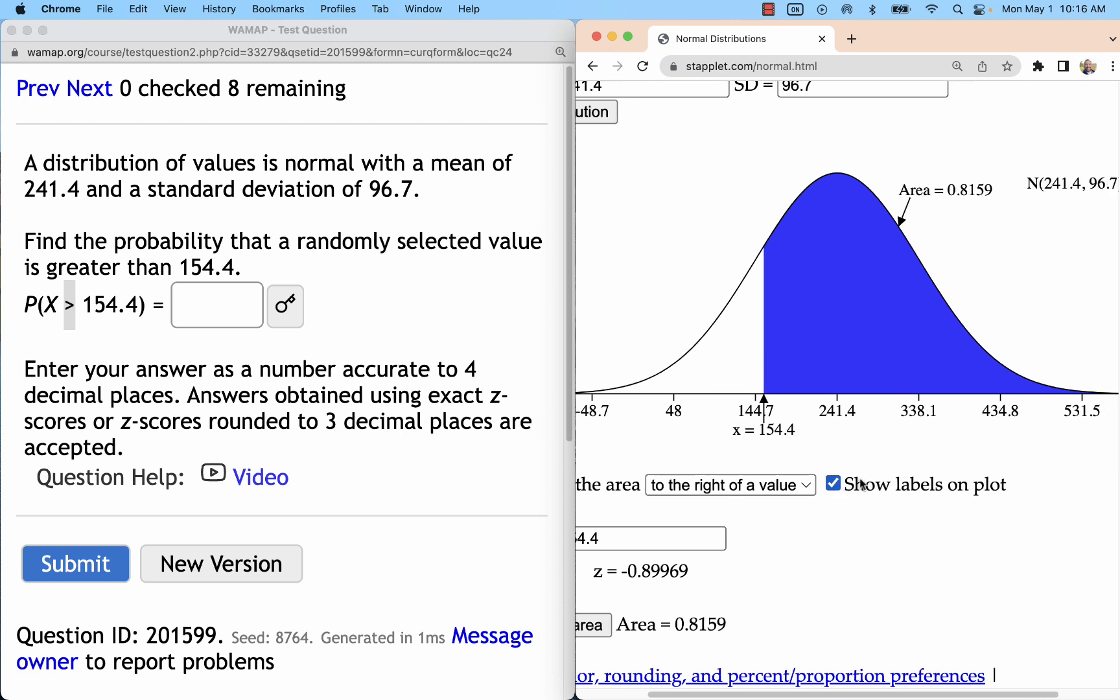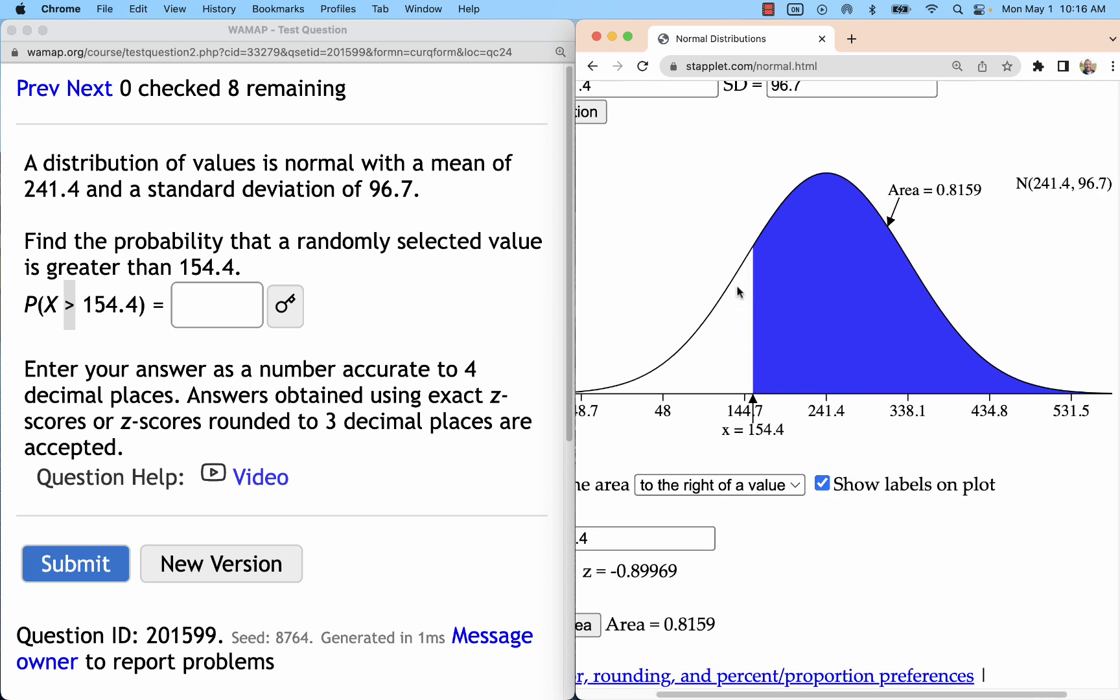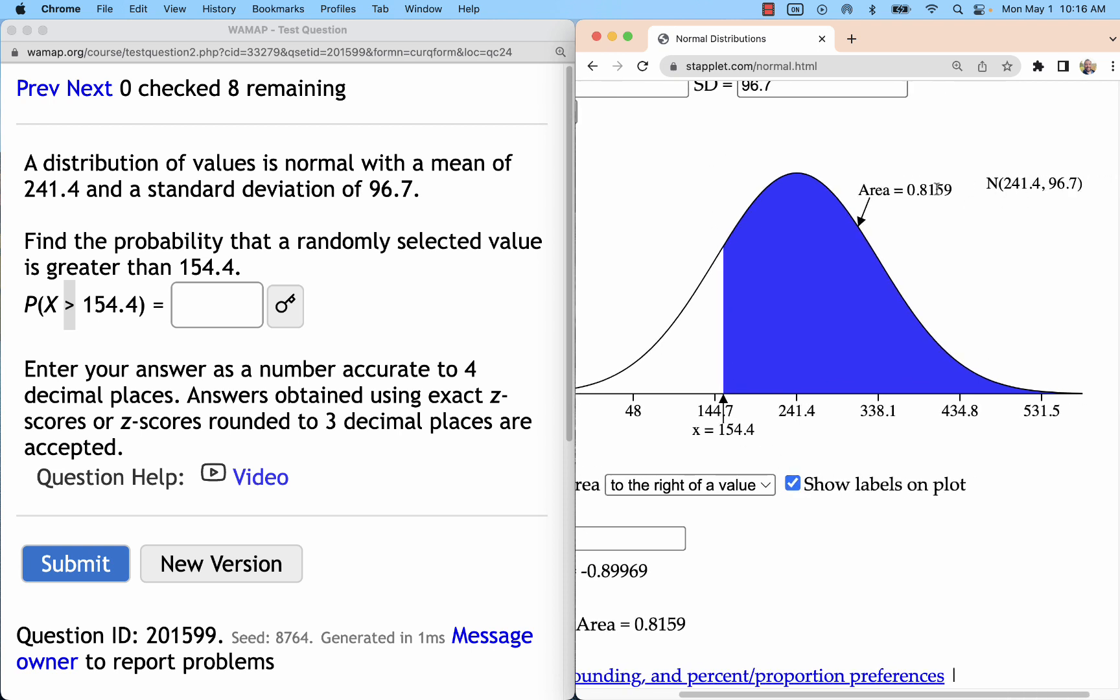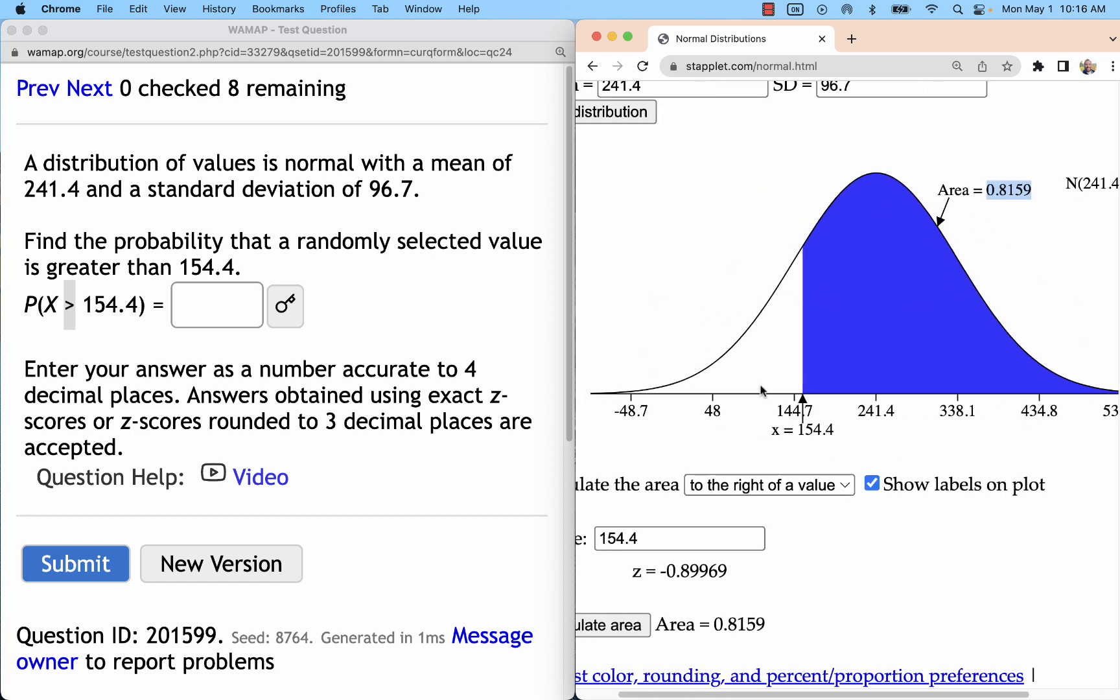And showing labels, we'll see our x value. That is a boundary for the shaded region, and our shaded region itself is about 82% of the curve.